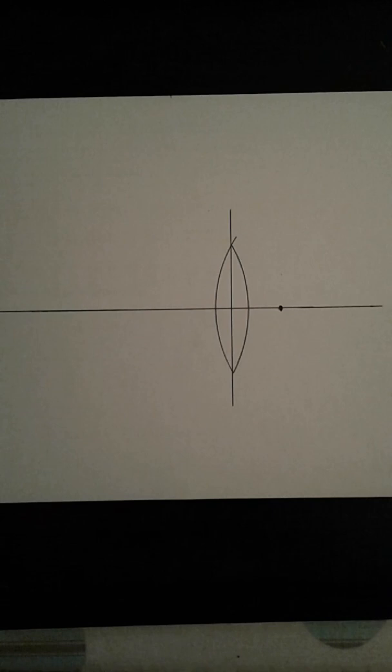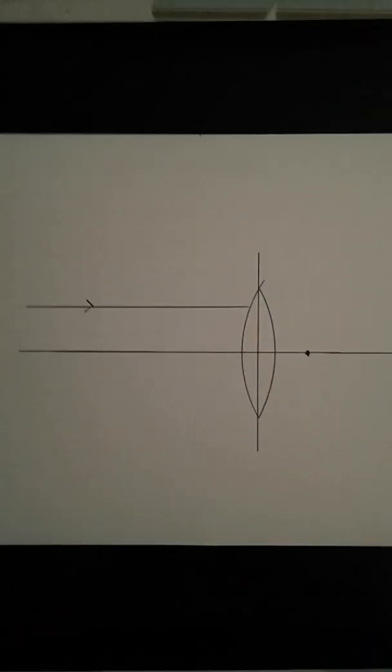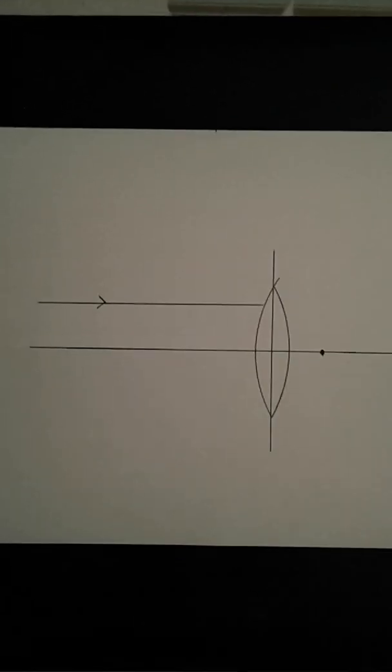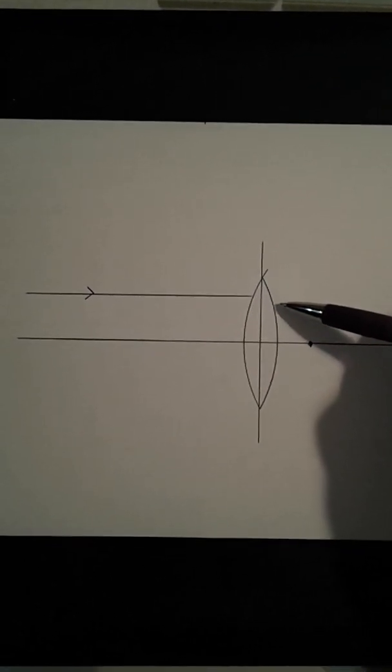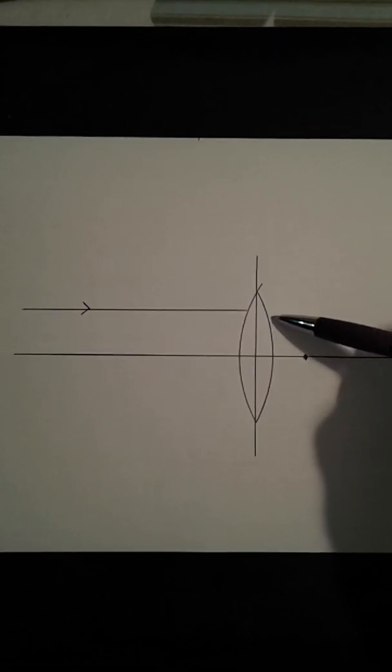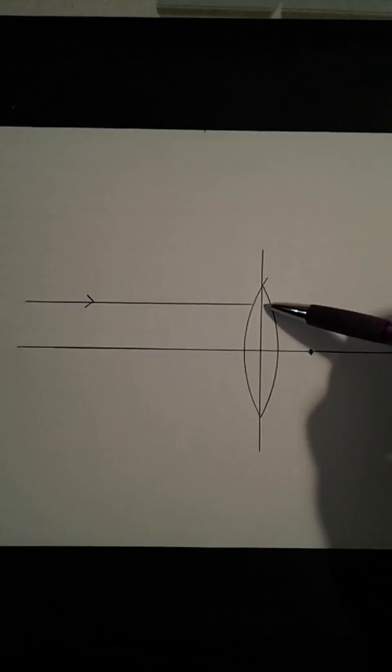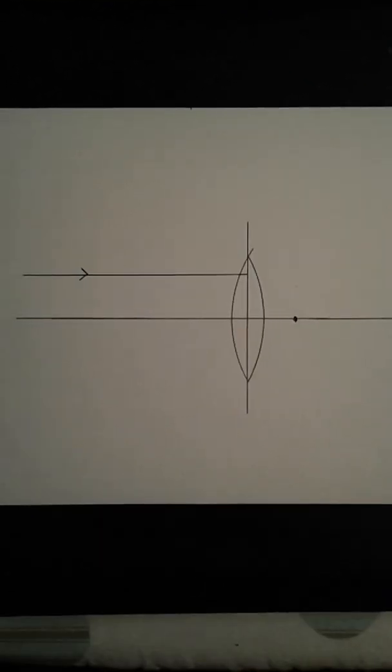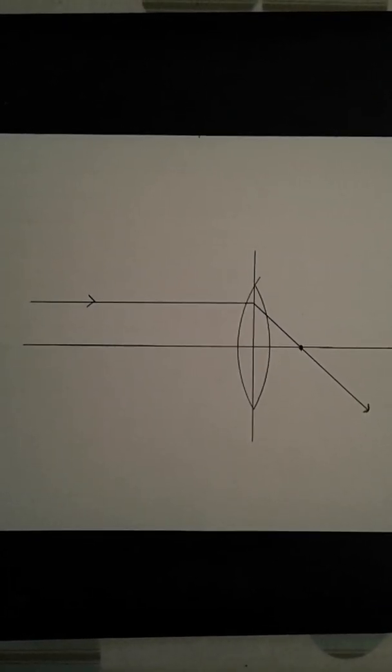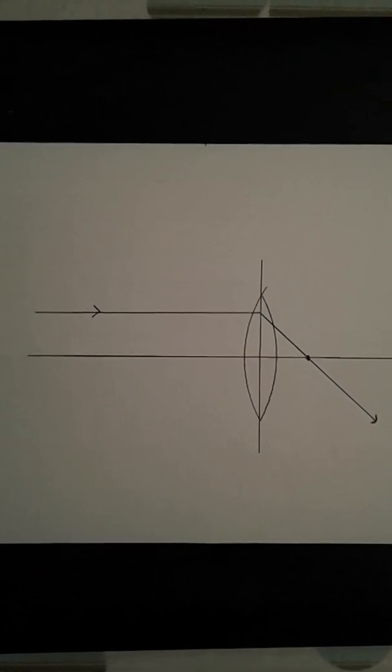Let's make a ray diagram for measuring the focal length. A light ray coming in parallel to the principal axis would refract here and then refract here again. But to keep things simple we're just going to bend it once right at the center of the lens. So we say that the light ray that comes in parallel to the principal axis goes out through the focus.